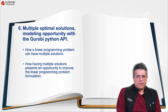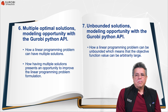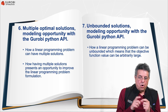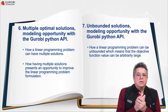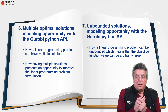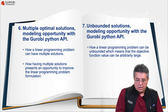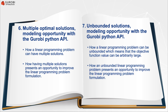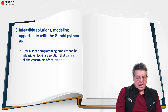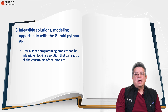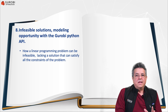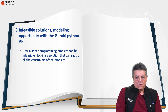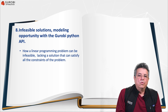In section seven, we are going to show how a linear programming problem can be unbounded, meaning the objective can be arbitrarily large when maximizing, and how this presents an opportunity to improve the formulation. In section eight, we are going to show how a linear programming problem can be infeasible — meaning there is no solution that satisfies all the constraints — and how an infeasible problem also presents an opportunity to improve the formulation.